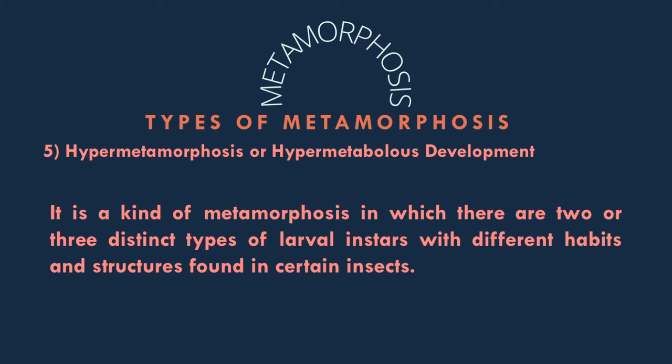The hypermetamorphosis is a kind of metamorphosis in which there are two or three distinct types of larval instars with different habits and structures, found in certain insects.